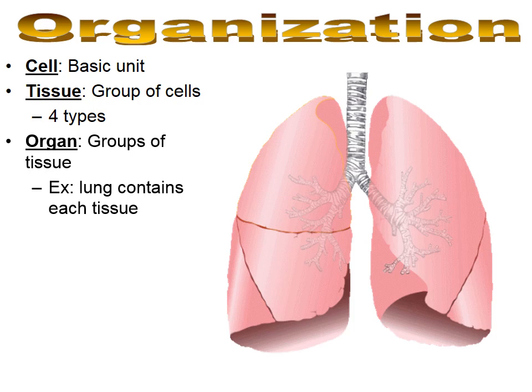The next level of organization is what's called an organ. An organ is simply a collection of tissues. Lungs, for instance, are two organs made up of epithelial tissue, connective tissue, muscle tissue, and nervous tissue — all types of tissue make up what we call lungs. The heart is an organ made from all types of tissues, and so is the liver.